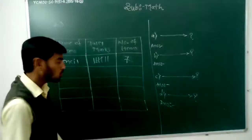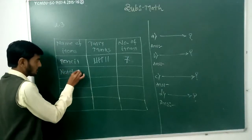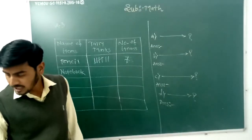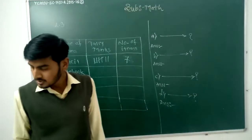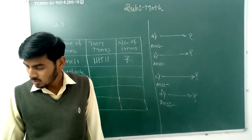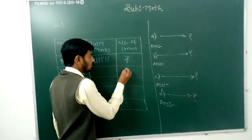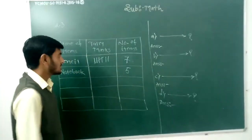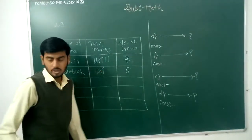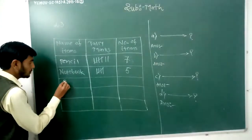Next item is notebook — write down notebook. So how many notebooks were sold from the stationery? Count: 1, 2, 3, 4, and 5. Total 5 notebooks sold from the stationery. Write down your tally marks: 1, 2, 3, 4, 5.